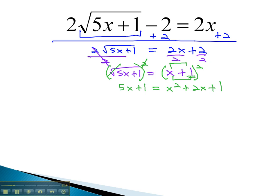As the x squared is already positive, we'll move everything to the right by subtracting 5x and subtracting 1 from both sides. This gives us 0 equals x squared minus 3x, and the 1's also subtract out.